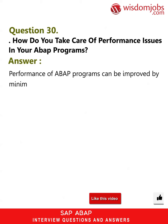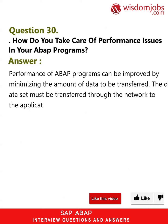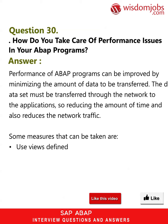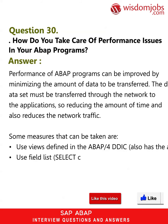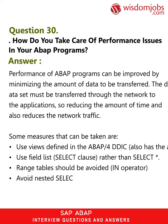Question 30: How do you take care of performance issues in your ABAP programs? Performance of ABAP programs can be improved by minimizing the amount of data to be transferred. The data set must be transferred through the network to the application, so reducing the amount of data also reduces network traffic. Some measures that can be taken: use views defined in the ABAP/4 data dictionary, which also has the advantage of better reusability; use a field list in the SELECT clause rather than SELECT *; range tables should be avoided with the IN operator; avoid nested SELECT statements.